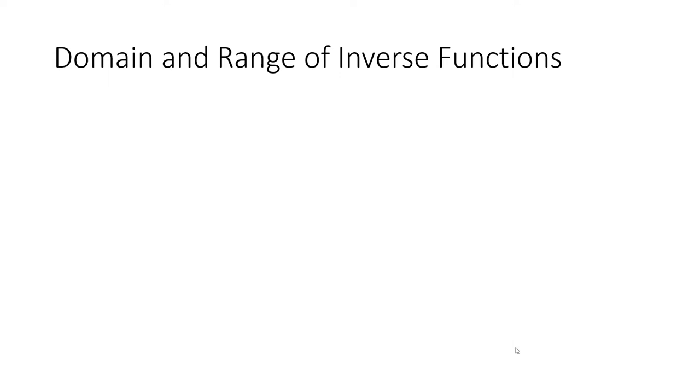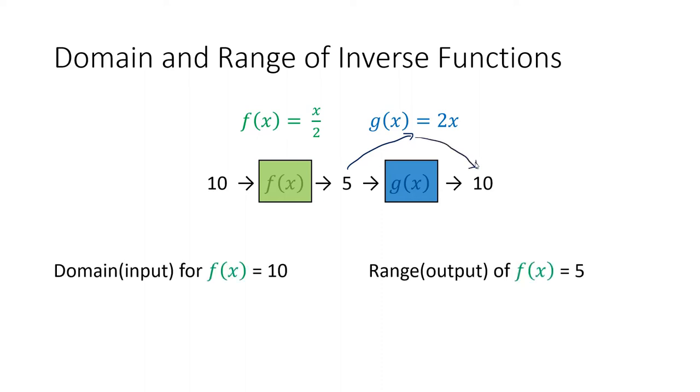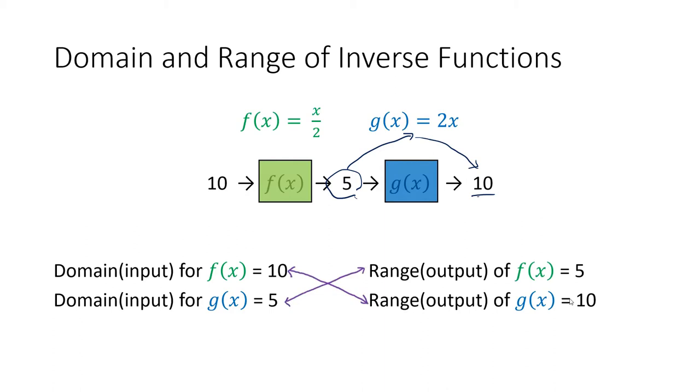Let's look at the relationship between domain and range of inverse functions. Here we have two inverse functions, which we've proven in previous slides. If I plug 10 into f(x), I get half of 10, which gives me 5. And if I plug 5 into g(x), it doubles it and gets me right back to 10. So the domain or input for f(x) was 10, and the range or output was 5. And the domain of g(x) was 5, and the range was 10. They are reciprocal or opposites. The domain for one function was the range of the other, and the range of one function was the input for the other.